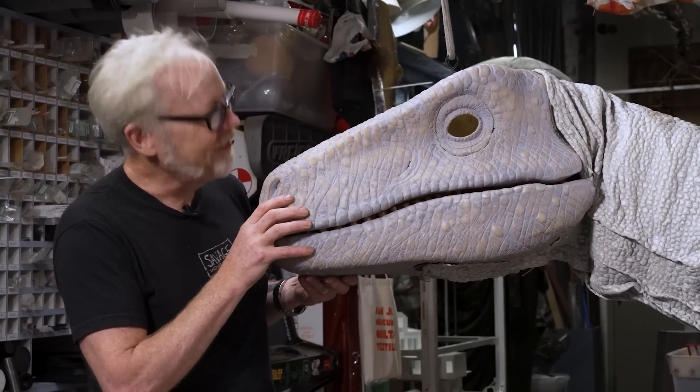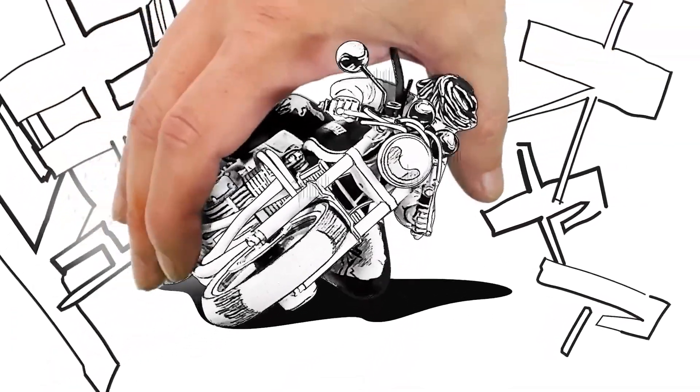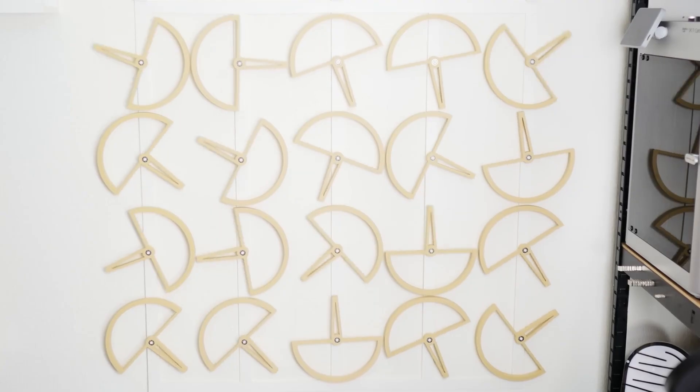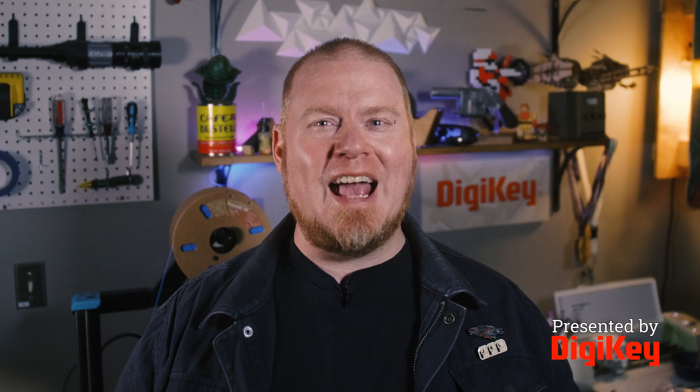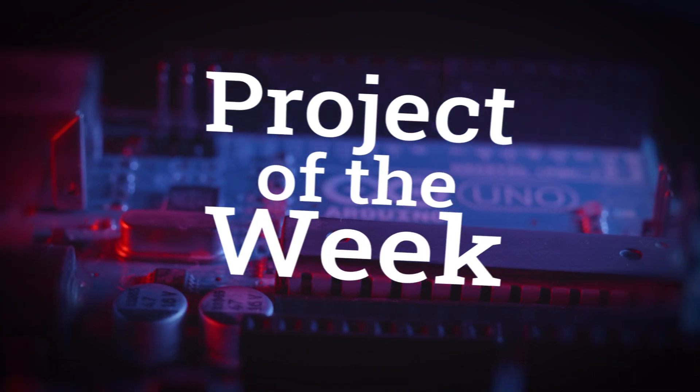This week on Maker Update: a clever girl manga you could touch, the magic of styrene, and the kinetic sculpture that doesn't need a motor. Hello and welcome back to Maker Update, the show where you go to stay up-to-date on all the cool things that makers are making. I'm Tyler Weiner and I hope you're all doing great. We've got a wonderful show for you, so let's get it going with the project of the week.